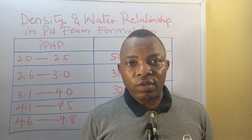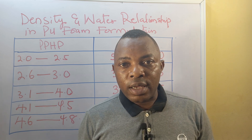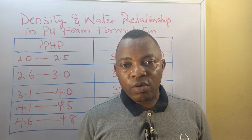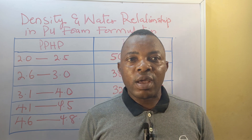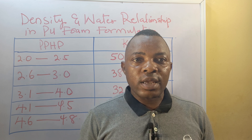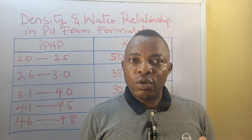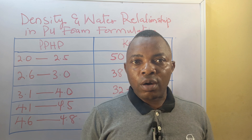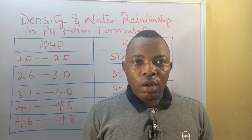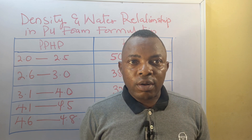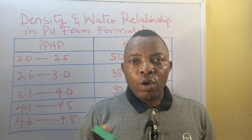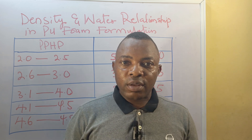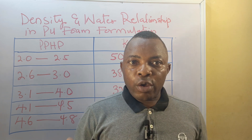Foam reaction is exothermic in nature — heat is generated from the system to the environment. So the function of methylene chloride is to take this heat away from the system so that the foam would be safe and will not get ignited. Methylene chloride is a coolant. You can produce high density foam without methylene chloride, but you cannot produce low density foam without it.